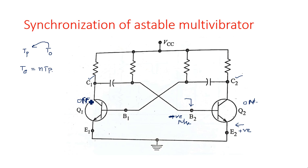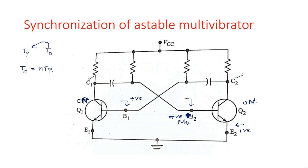Consider the same situation: first transistor is in off state, second transistor is in on state. We are applying negative pulses, forcibly bringing transistor Q2 into off state. When we apply a negative pulse, Q2 goes into off state and immediately Q1 comes into on state. Alternatively, applying positive pulses at base 1 will also change the status of Q1. Positive pulses should be applied to the transistor in off state, and negative pulses to the transistor in on state.